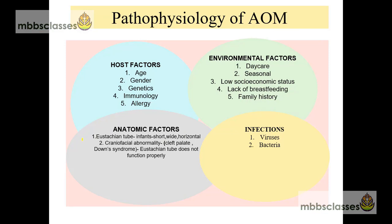Coming to anatomic factors, the most important is the direction of the eustachian tube in infants. Infants are more susceptible to developing acute otitis media because, as you may remember from anatomy classes, the eustachian tube is short, wider, and horizontally located in infants. So any infection from the nasopharynx is transferred very easily to the middle ear cavity. Next are craniofacial abnormalities like cleft palate. In syndromes like Down syndrome and Treacher Collins syndrome, the eustachian tube doesn't function properly, making this group of patients more susceptible to developing acute otitis media.